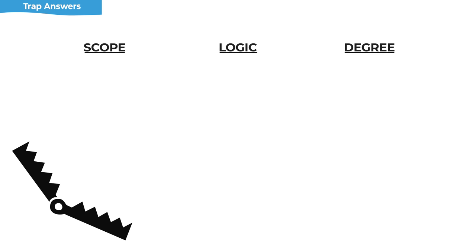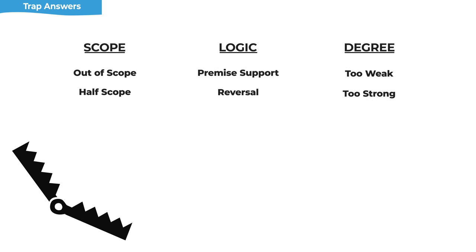There are lots of different types of trap answer patterns, but they all fall into three general buckets: those relating to scope, those relating to logic, and those relating to degree. For each question type, there are three to five trap answer patterns you really need to know so that you're looking for specific things in the answer choices and can eliminate those tempting but wrong ones.